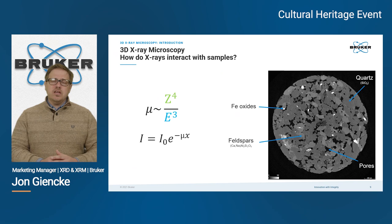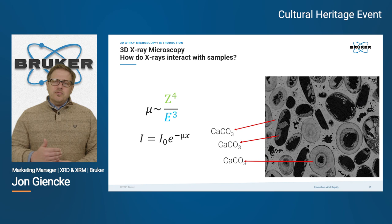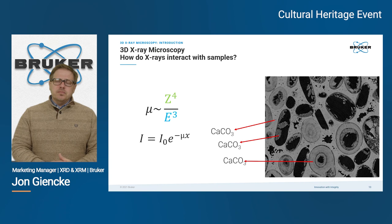Attenuation is affected not only by the elemental species but also the density of the material. For example, if all material is the same — calcium carbonate, as in shells — different portions with different physical densities will show different attenuation. The thickness of objects also matters: thicker, heavier objects produce greater attenuation.